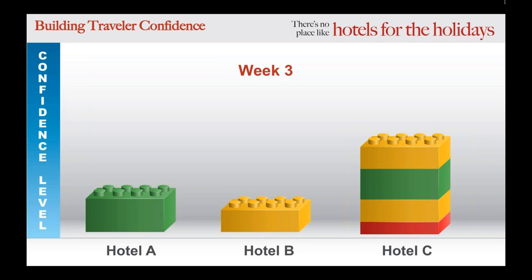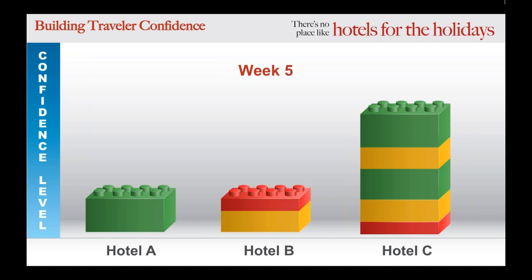Now, let's look at this through the lens of a traveler. Prior to the pandemic, most hotels would want to be Hotel A and most travelers would probably choose Hotel A. But in 2020, a lot can happen in two weeks — and with no new feedback from Hotel A, that last positive review could feel like a lifetime ago and not even be relevant to the traveler researching the property right now. That's why you see Hotel C's level of traveler confidence built to the level that it is.